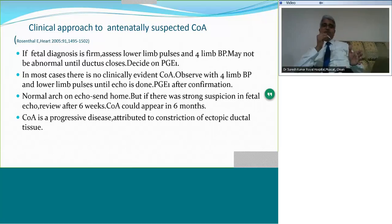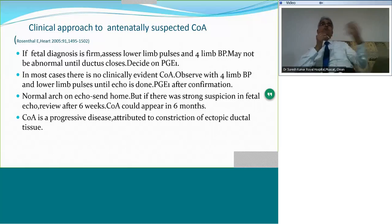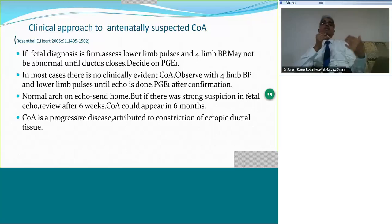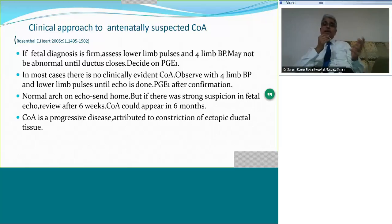Coarctation is a progressive disease — even in six months, coarctation can appear. Why is it progressive? There is ectopic ductal tissue in the aortic wall around the duct, and this tissue undergoes progressive constriction causing coarctation to appear fresh. What you had not thought about in the neonatal period may appear at three months or six months. This is common. Such an algorithm is necessary when there is a fetal diagnosis of coarctation.